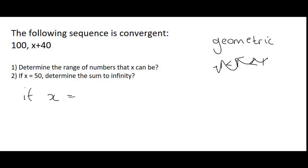Let's say x was 30. Then your sequence would have the number 100 and then 30 plus 40 is 70. Aha! So now to get from 100 to 70 you multiply. Remember it's all about what do you have to multiply with. Well you're going to multiply with 0.7.